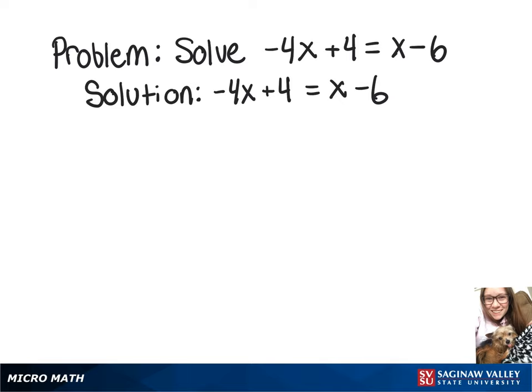To start off, we're going to add 4x on both sides. That'll leave us with 4 equals 5x minus 6.